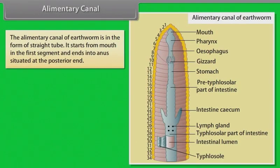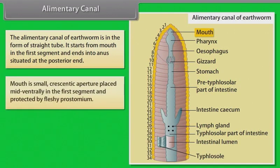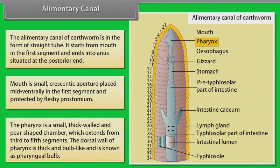Alimentary Canal. The alimentary canal of earthworms is in the form of a straight tube. It starts from mouth in the first segment and ends into anus situated at the posterior end. The mouth is a small, crescentic aperture placed mid-ventrally in the first segment and protected by the fleshy prostomium. The pharynx is a small, thick-walled, pear-shaped chamber which extends from the third to fifth segment. The dorsal wall of pharynx is thick and bulb-like, known as the pharyngeal bulb.